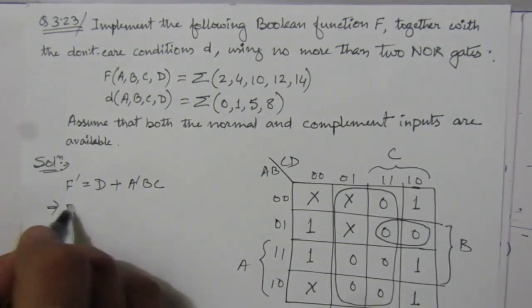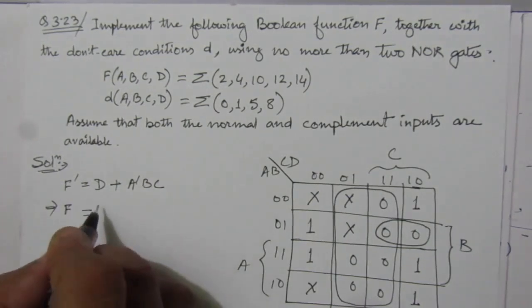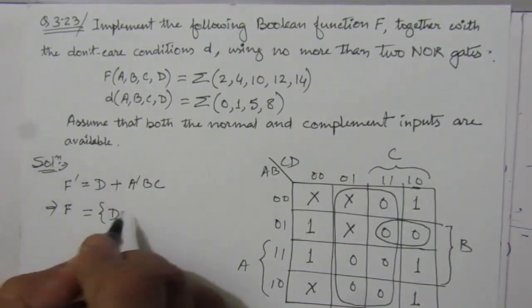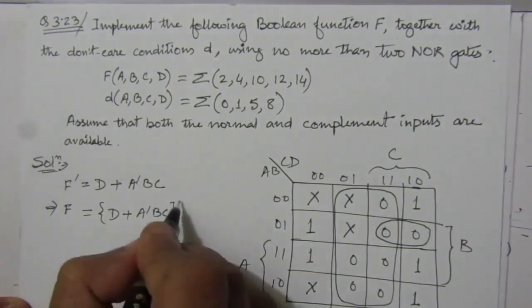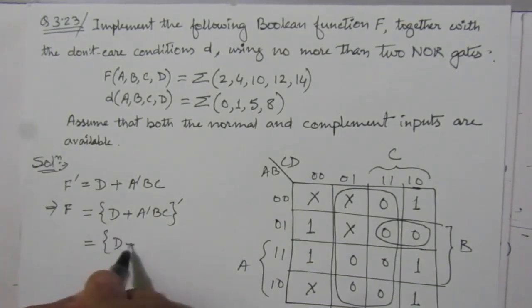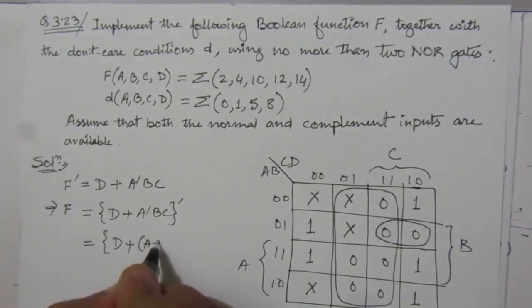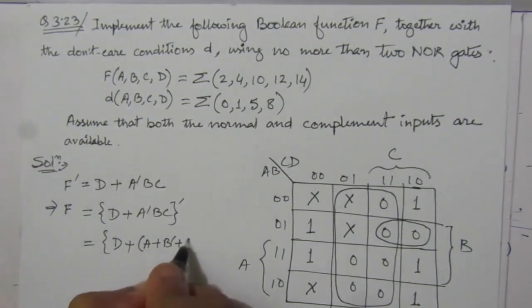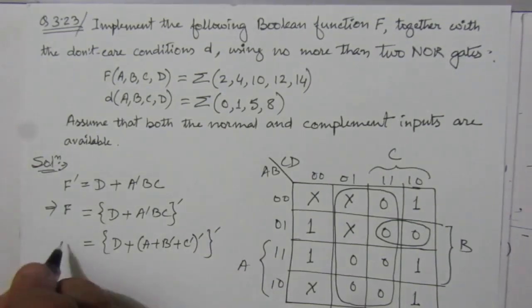Now we can rewrite it as: if we take the complement again, it will become function F. F equals D plus A bar B C, all bar. Then we can again simplify it as: D plus A bar B C. Using De Morgan's theorem, we can rewrite it as D plus (A plus B bar plus C bar) whole bar, then whole complement. So this is the function.